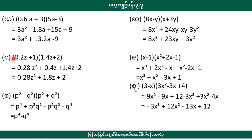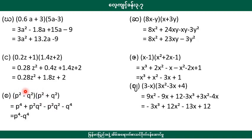So 0.2a plus 1 is equal to 2. So 0.2a plus 1 is equal to 2. So 0.2a plus 1 is equal to 1.4a plus 2.